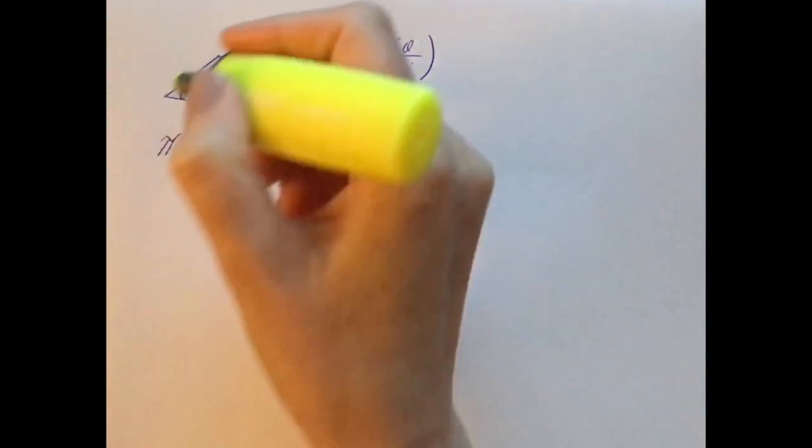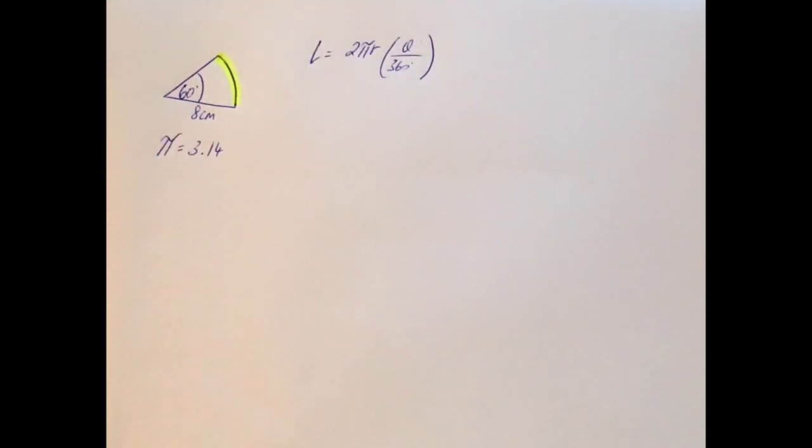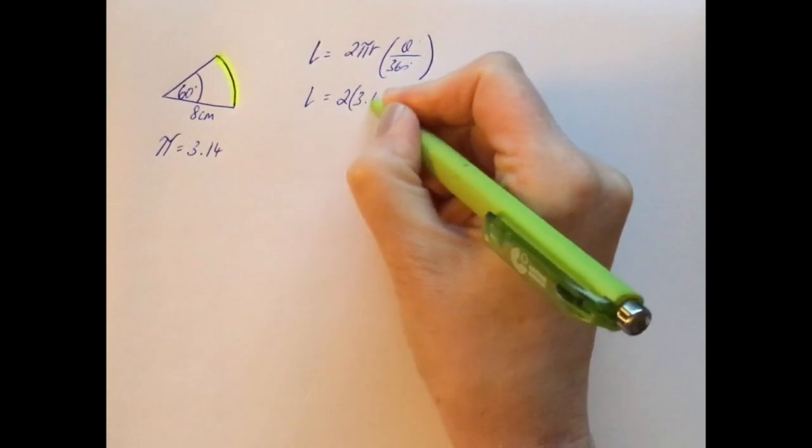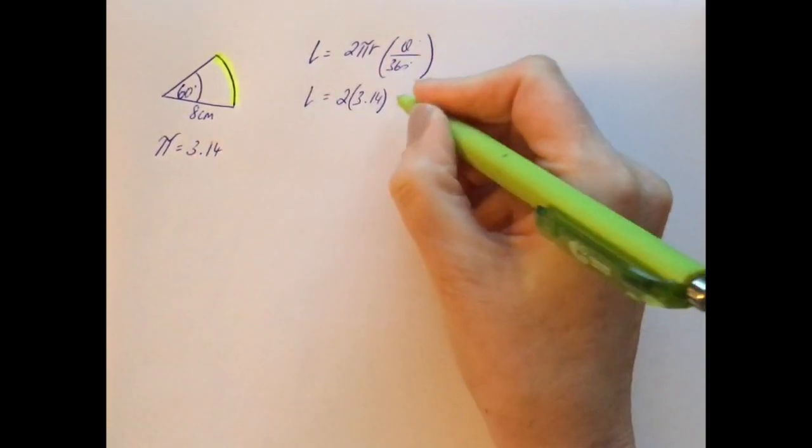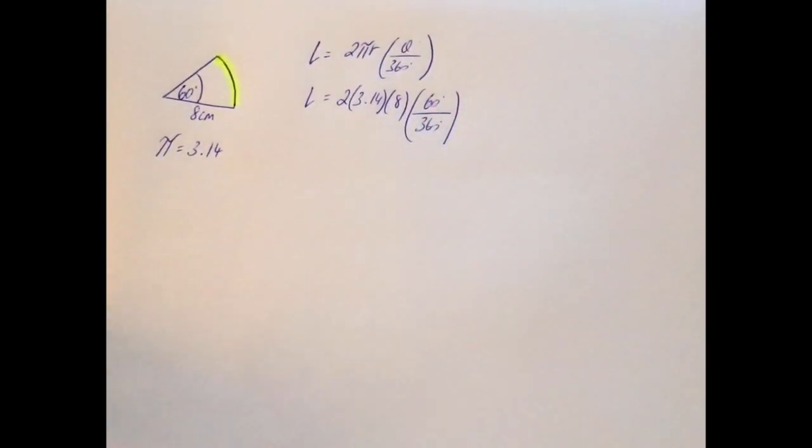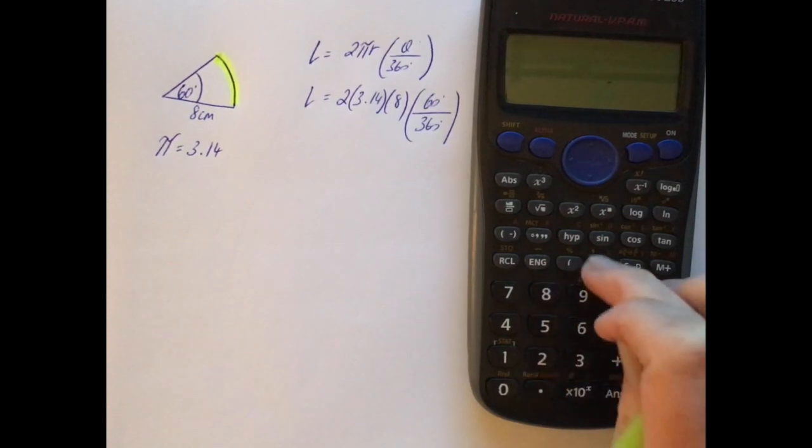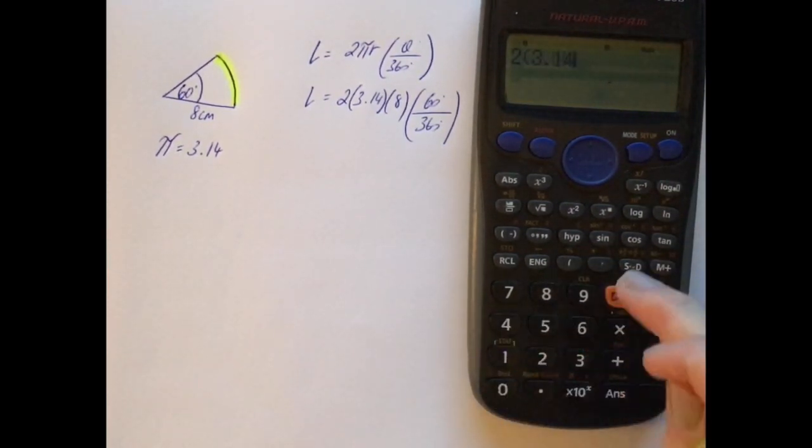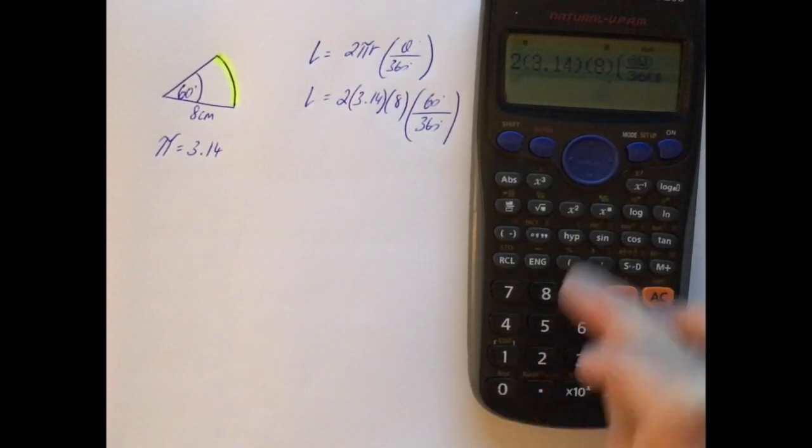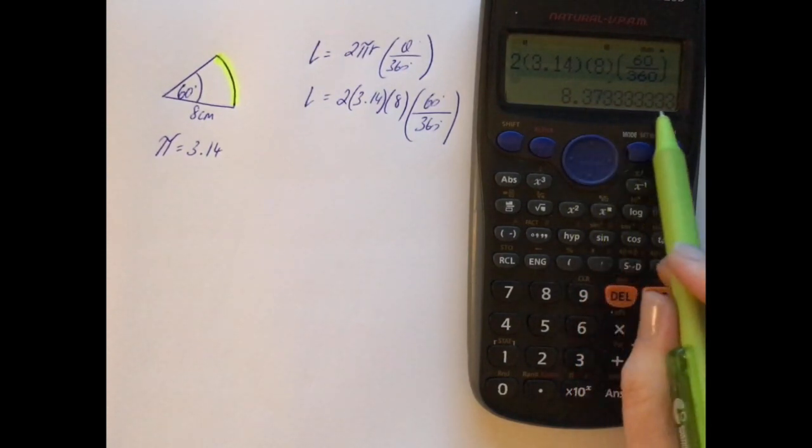Now if you're getting the arc length, all you're getting is the length of this curved arc here, that's all you're getting. So when we plug in our values in here, we have 2, and of course pi we're taking as 3.14, the radius is of course 8, the angle is of course 60 degrees. And if we type that in on the calculator, we get 2 bracket 3.14 close the bracket, 8, and then of course put our fraction 60 over 360.